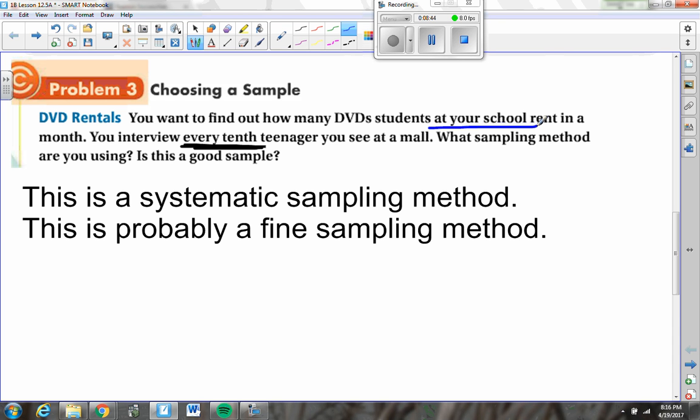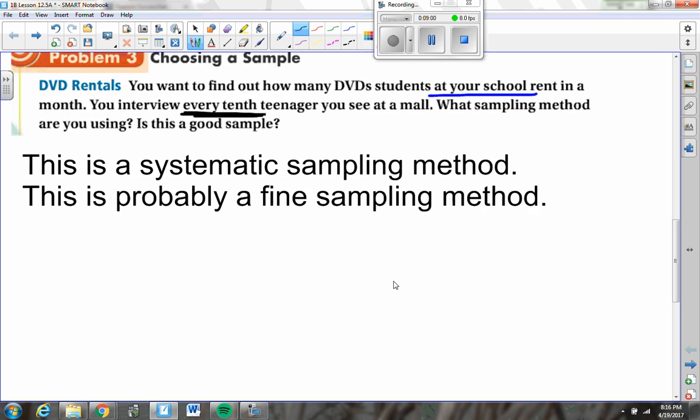So part of your homework is going to be to kind of do some thinking and decide, well, not only what kind of sampling method is this, but is it an okay sample? Is it okay that I did this? Do I think I'm going to get some good results from my sample? Because when we don't get good results from a sample, we run into something in statistics which is called bias.